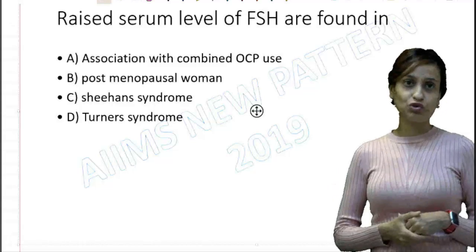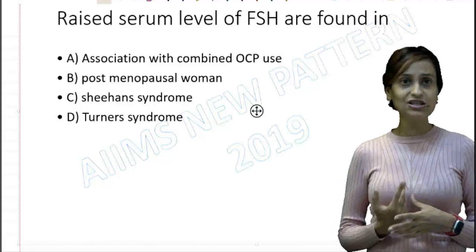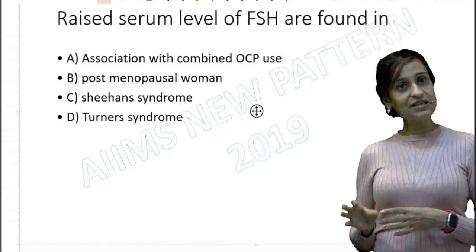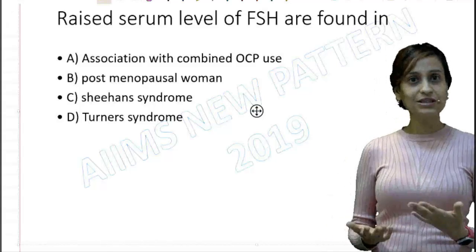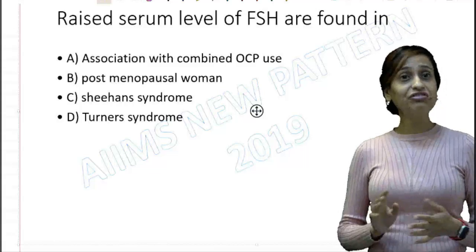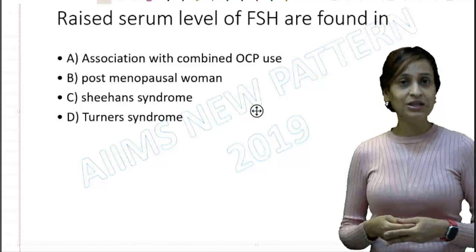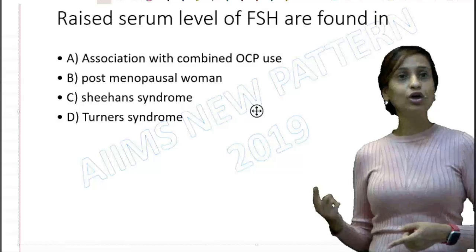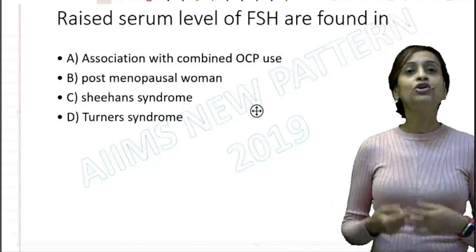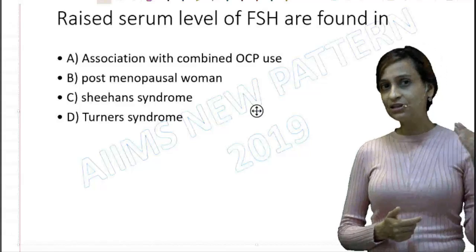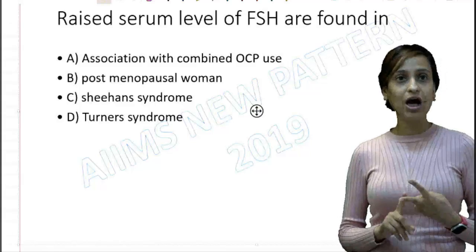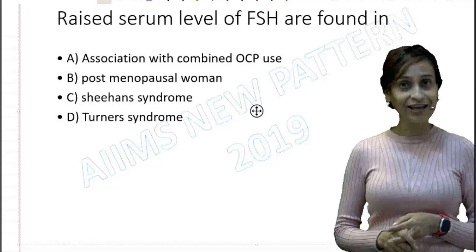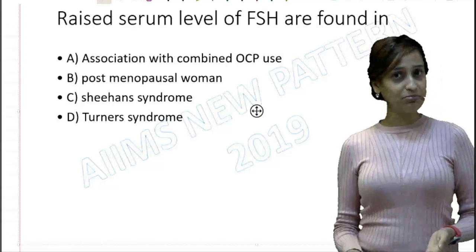Turner's syndrome is the most common cause of gonadal dysgenesis. In Turner's there are streak ovaries, which means the ovaries are not producing the hormones they are normally supposed to. Therefore feedback inhibition is absent, and the FSH levels are going to be high. That is why Turner's is an example of hypergonadotropic hypogonadism. So in this MCQ, options B and D are correct — postmenopausal women and Turner's syndrome both show high FSH levels.